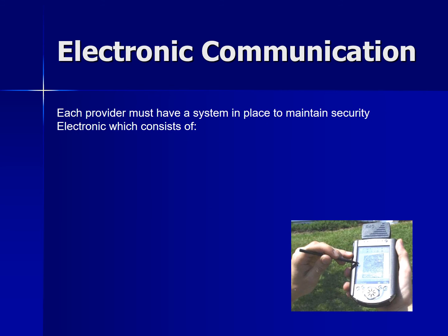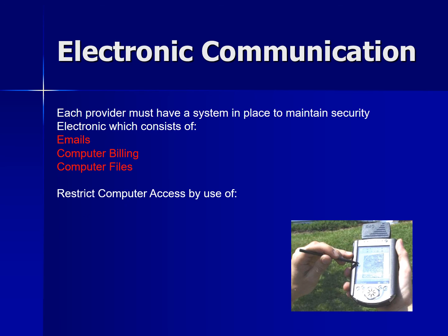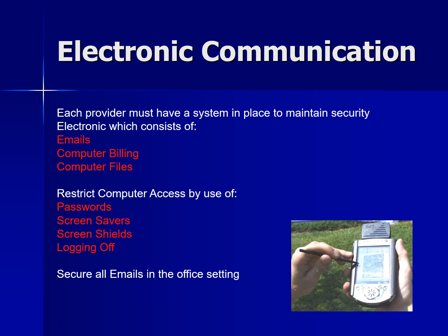For electronic communication, each provider must have a system in place to maintain security, which consists of emails, computer billing, and computer files. Restrict computer access by use of passwords, screen savers, screen shields, and logging off. Secure all emails in the office setting, including laptops and PDAs. Also important: maintenance and updated software, and daily backup of files.